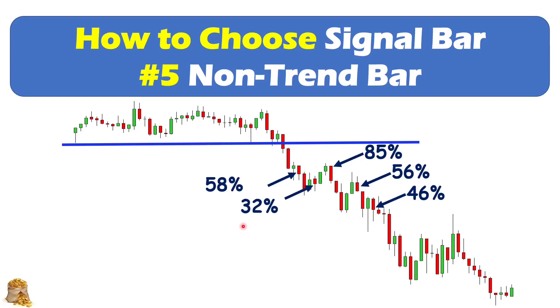By these examples, you can see that basically the trend bar will have a higher probability of leading to the start of a trend. The non-trend bar has a lower probability.